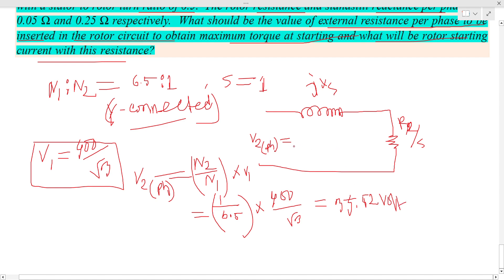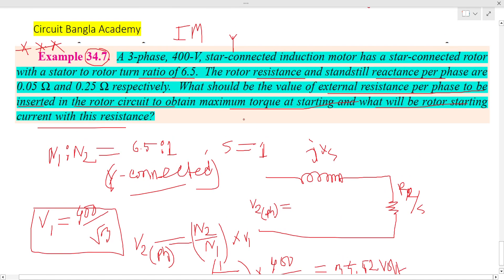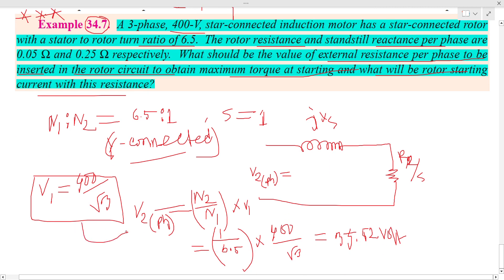This is the line voltage, and when you convert it for a star connection, you convert the line voltage to phase voltage. Then you convert to get the rotor voltage using the turn ratio, referring from the stator peripheral to the rotor circuit. This gives us the rotor phase voltage value.